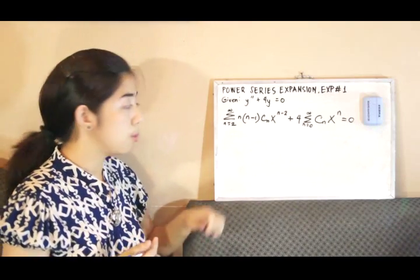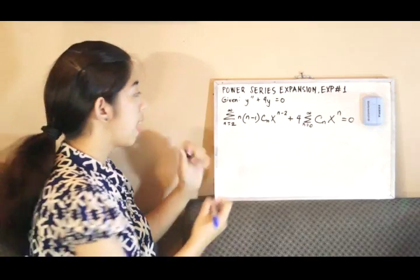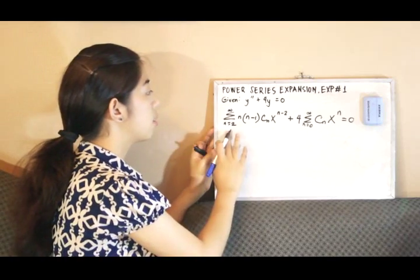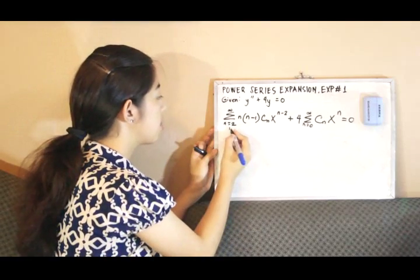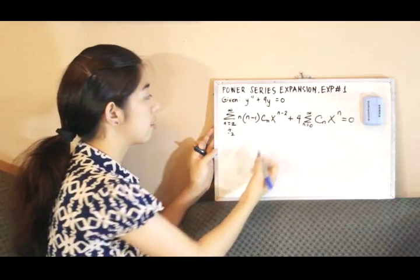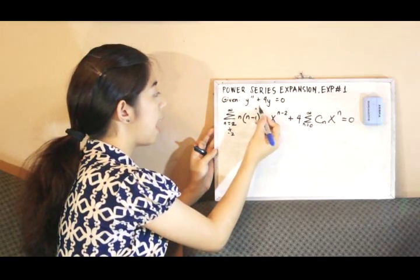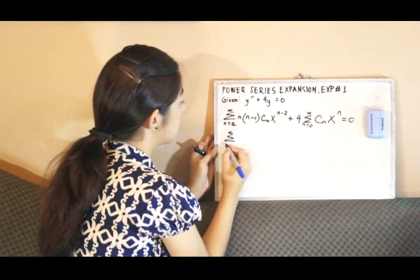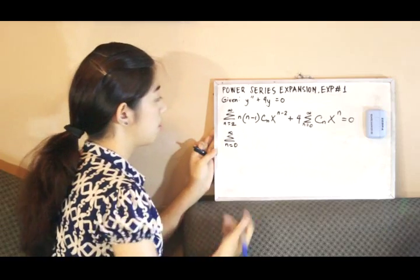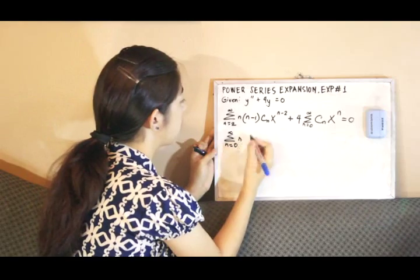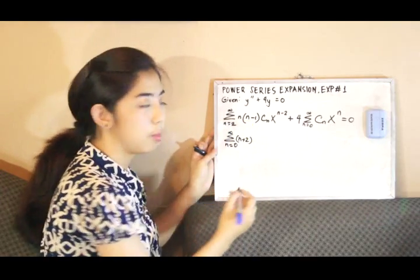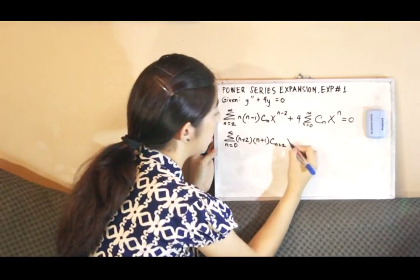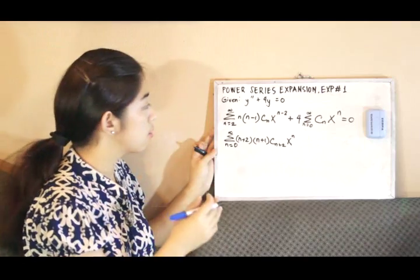As you can see, we don't have a balanced summation sign — we have n equals 2 here, while we have n equals zero on the other side. We can balance both to n equals zero by subtracting 2 from the index, and adding 2 throughout the expression. So 2 minus 2 equals zero, and we now have n plus 2, n minus 1 plus 2 is n plus 1, c sub n plus 2, and x raised to n because negative 2 plus 2 is zero.